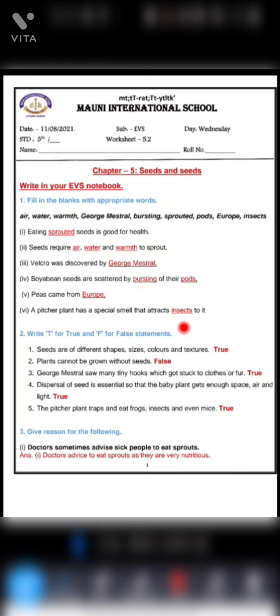Sixth one, a pitcher plant has a special smell that attracts insects to it. Now question number two, write T for true and F for false statements. First one, seeds are of different shapes, sizes, colors and textures. So yes, this one is true.